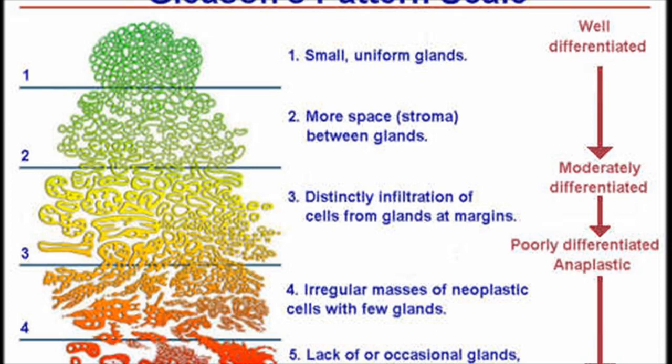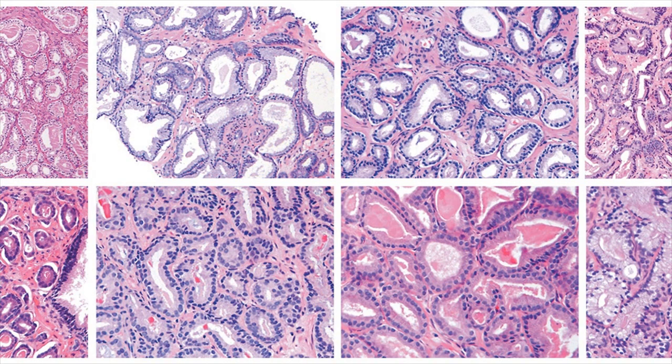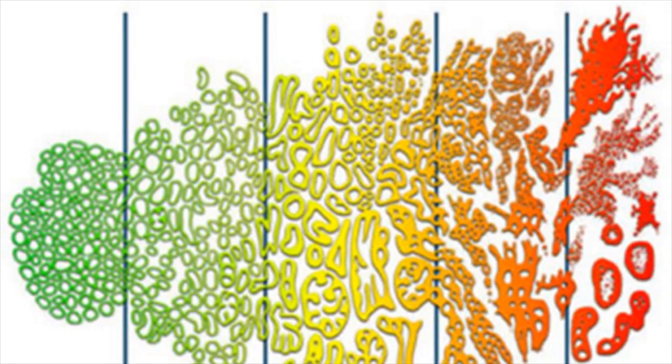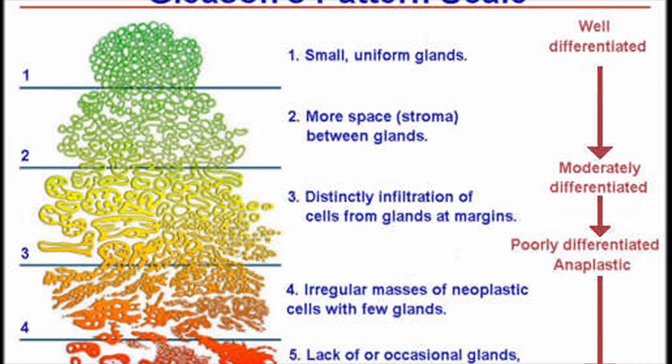Prostate Cancer Gleason Score. Biopsy samples from the prostate gland are examined by a pathologist. The pathologist makes determinations based on the samples as to the aggressiveness of the cancer. This determination is called the Gleason Score.